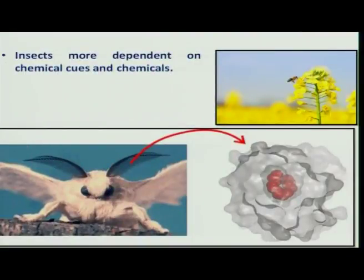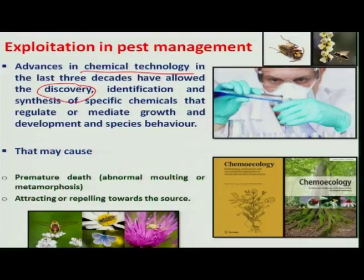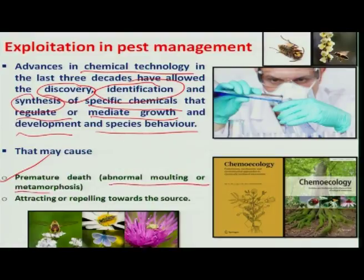For their communication, insects most of the time depend on chemicals and chemical cues. This phenomenon has been used in pest management, and much work on chemical technology has been ongoing for 3 to 4 decades, resulting in the discovery, identification, and synthesis of specific chemicals that regulate and mediate insect development and species behavior. When used, such chemicals cause premature death through abnormal molting or metamorphosis.